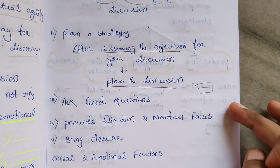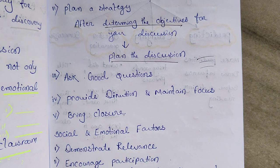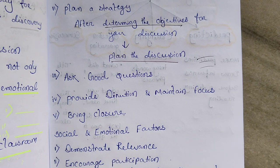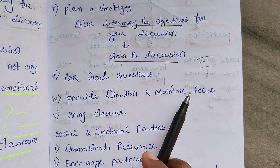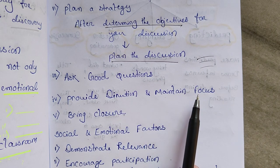The third point under cognitive factors is to ask good questions — exploratory questions, challenging questions, different types of questions. You can ask questions before the discussion, during the discussion, and after the discussion. The fourth point is to provide direction and maintain focus — maintain the students' focus throughout the discussion.